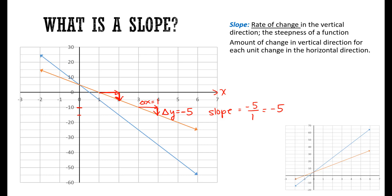With the blue line, as x increases by 1 unit — going across by 1 unit — y is going down from negative 15 to negative 25, that's a difference of 10. So it's going down by 10, and we give it a negative sign. The slope for the blue line is going to be the rise of negative 10 over 1. The slope is negative 10. So every time x increases by 1 unit, y goes down by 10, as indicated by the sign of the slope.